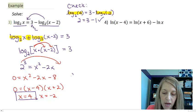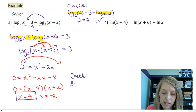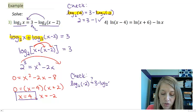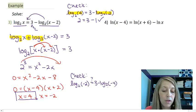Let me check the other solution down here. This is log base 2 of negative 2, is that equal to 3 minus log base 2 of negative 2 minus 2, which is negative 4.